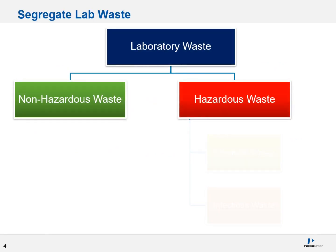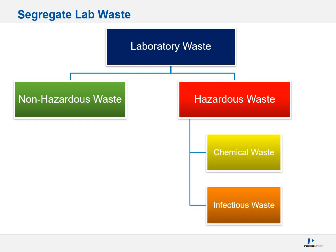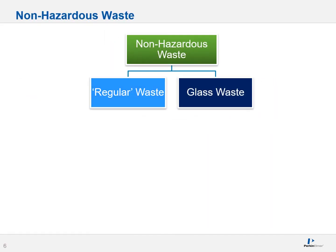Generally speaking, lab waste can be divided into two categories: non-hazardous waste and hazardous waste. Hazardous waste would be chemical waste and biological or otherwise infectious waste. Non-hazardous waste, on the other hand, is your day-to-day regular waste and glass waste.